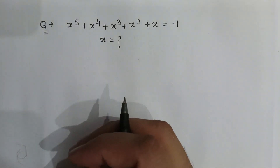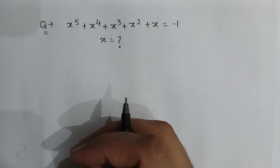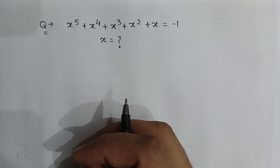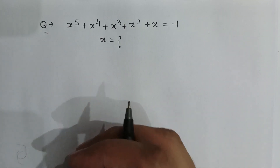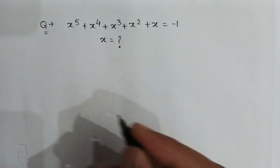x to the power 5 plus x to the power 4 plus x to the power 3 plus x squared plus x is equal to minus 1. Then find the value of x.